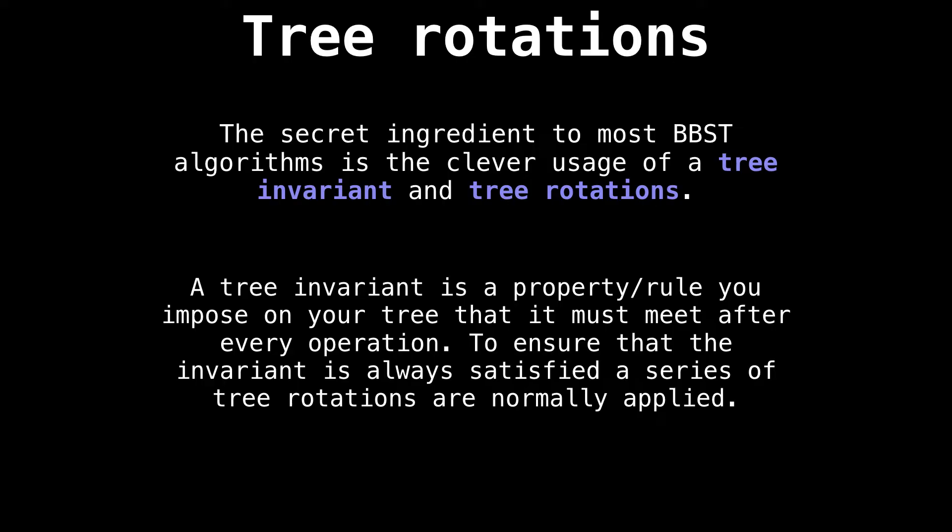A tree invariant is simply a property or a rule that you impose on your tree, such that it must be met at the end of every operation. To ensure that the invariant is always satisfied, a series of tree rotations are normally applied.